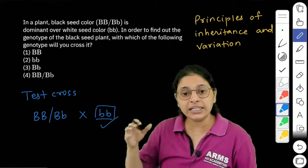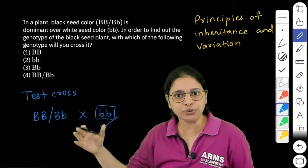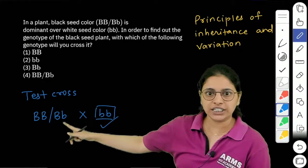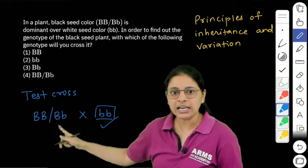This is a test cross. Depending on the offspring you get, you can find out the unknown genotype of that plant.